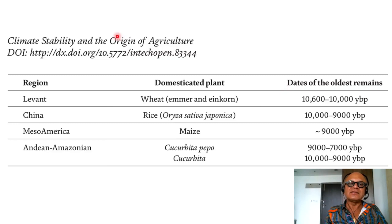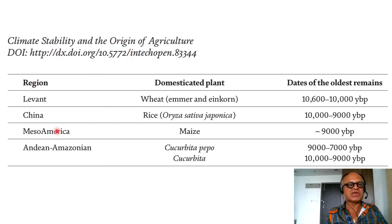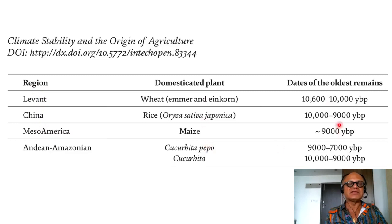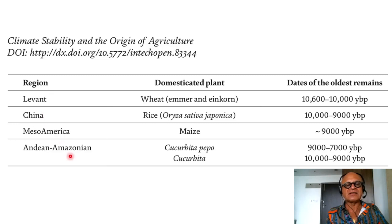We have already noted that the Holocene was a fairly stable climatic regime. Climate stability and the origin of agriculture — from this book again — can be seen in terms of regions and domesticated plants, and dates of the oldest remains from the evidences collected. Levant is the Fertile Crescent area approximately, along with China, Mesoamerica, and the Andean-Amazonian region that we just talked about.